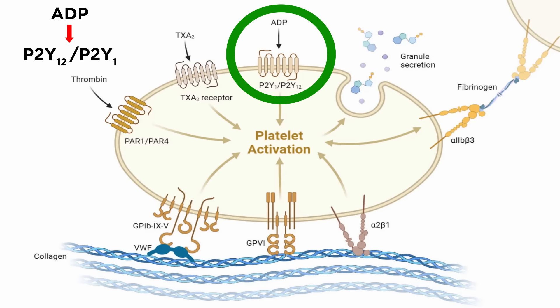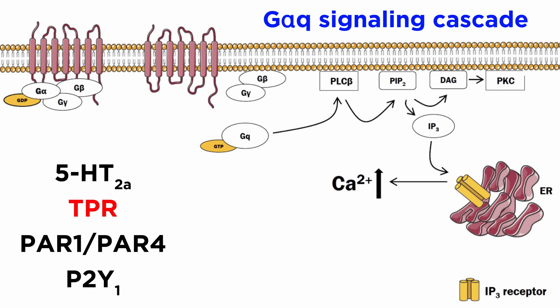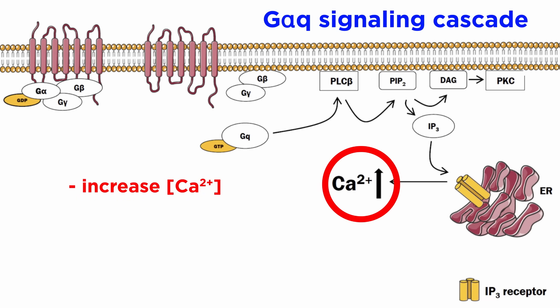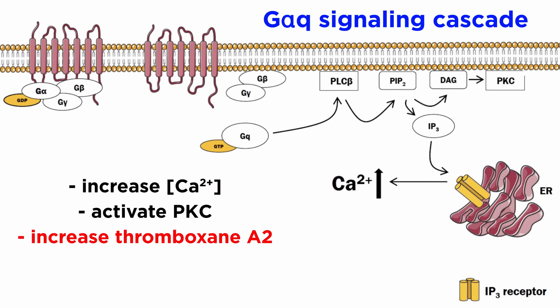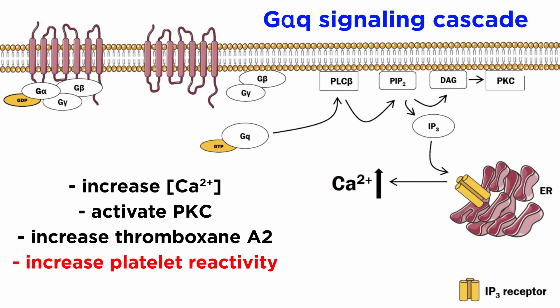ADP activates the P2Y12 and P2Y1 receptors. The 5-HT2A receptor, the thromboxane receptor, the protease-activated receptors, and the P2Y1 receptor, though not the P2Y12R, all primarily signal through the GαQ signaling cascade, which, as we've discussed, increases intraplatelet calcium concentrations, activates PKC, increases the production of thromboxane A2, and increases the platelet's reactivity by supporting further platelet degranulation. Importantly, it also upregulates integrin alpha-2b-beta-3 and its ability to bind to soluble circulating fibrinogen and establish further platelet-platelet interactions using fibrin as an adhesive.